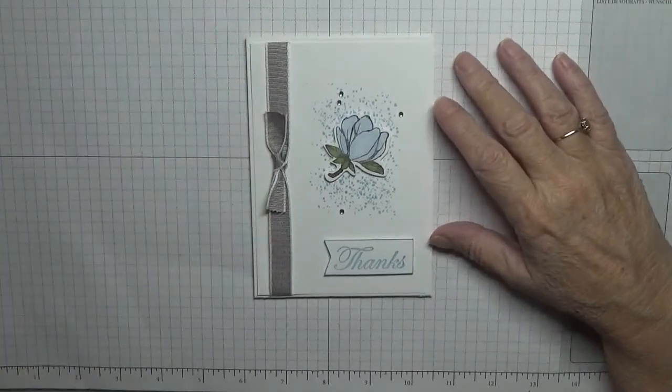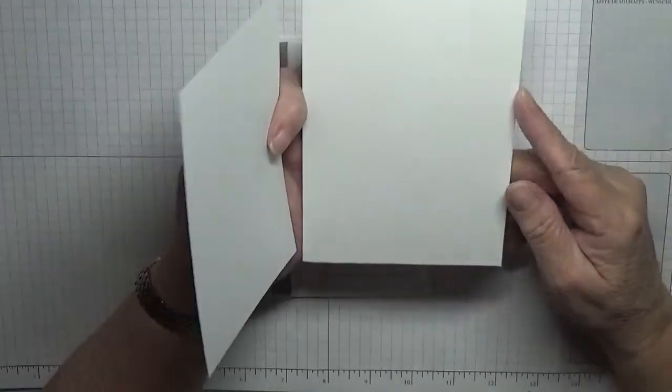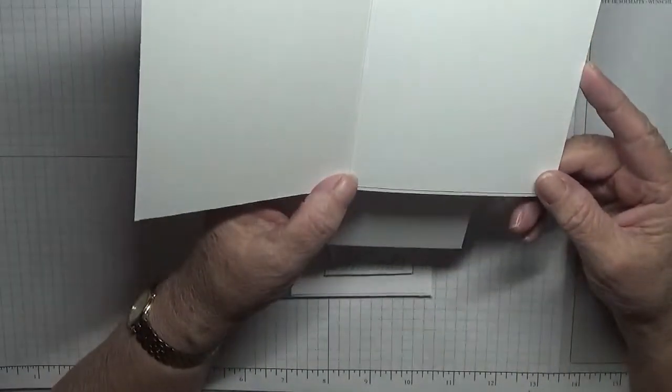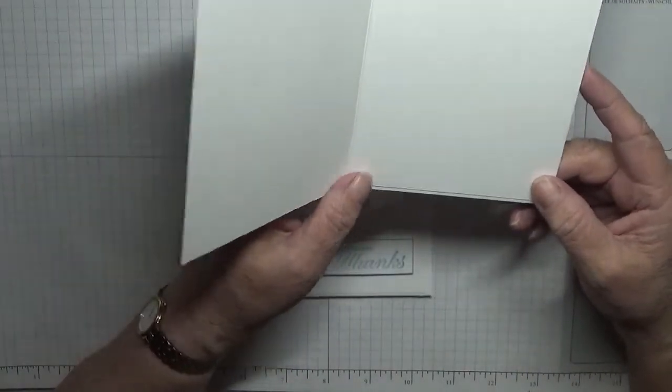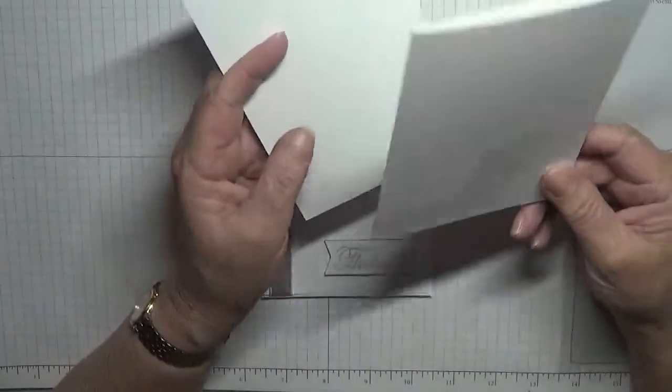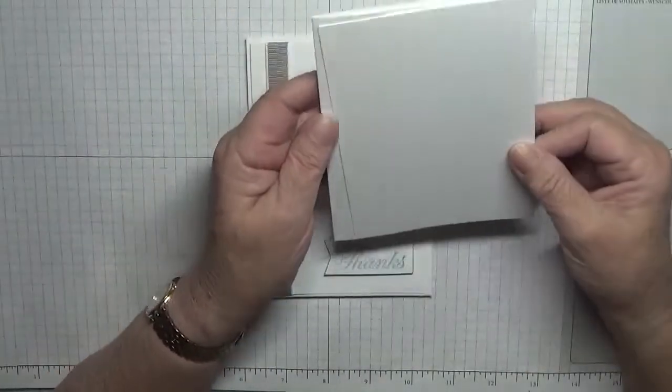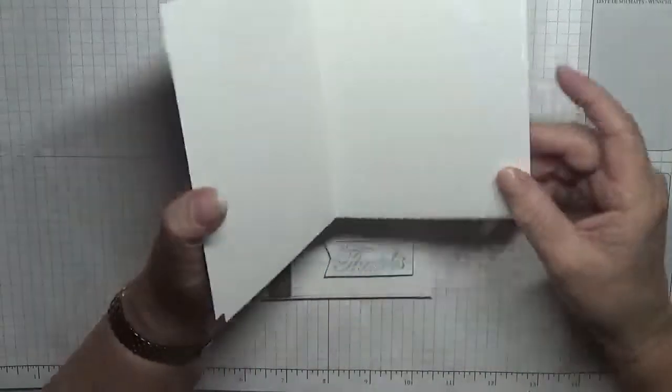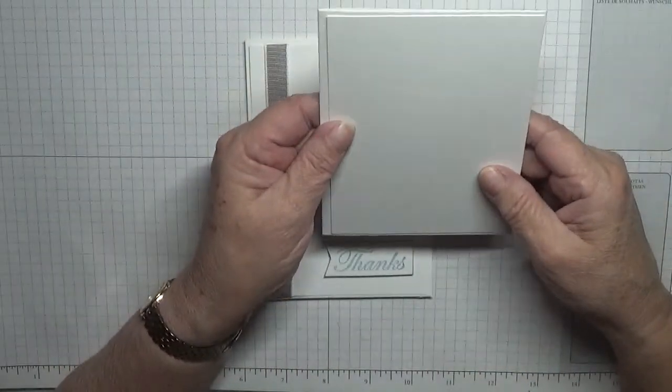All I've used is one white card base of 8.25 by 5.78, scored at 4.18 and folded in half. Two pieces of white, one for the inside which I've already stuck down, and one for the outside.